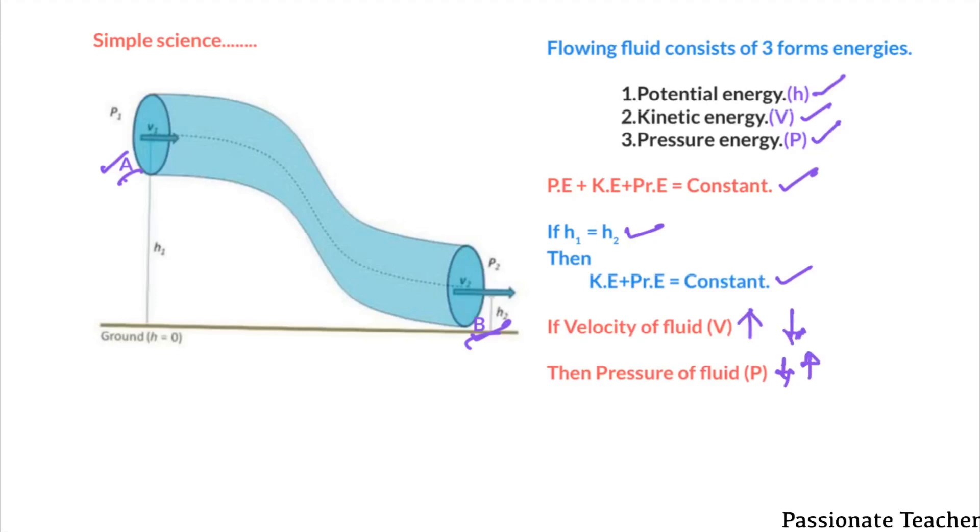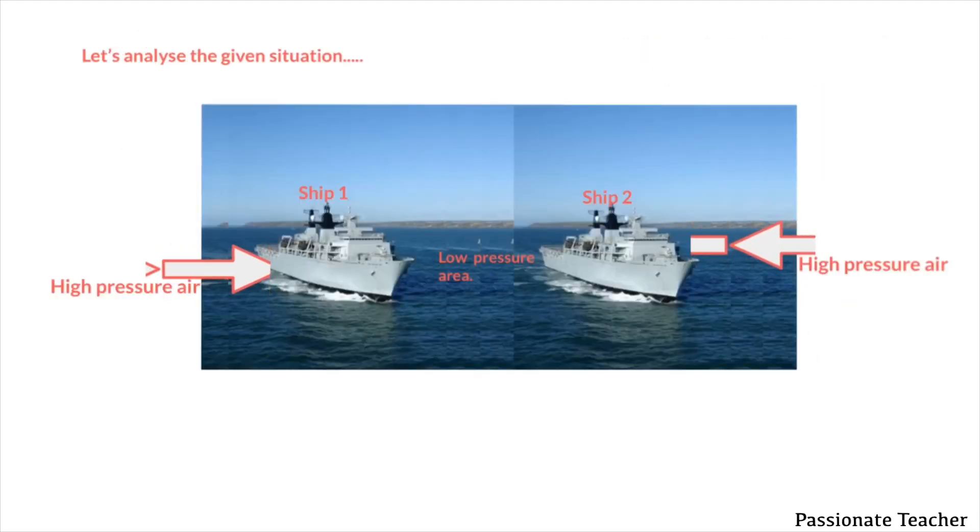When two ships are traveling parallelly with a very high velocity, then the air pressure between the ships will decrease. So it means automatically low pressure area will be created between both the ships. Now the atmospheric pressure will be higher than this low pressure area, so naturally high pressure air pushes both the ships as shown in the figure.